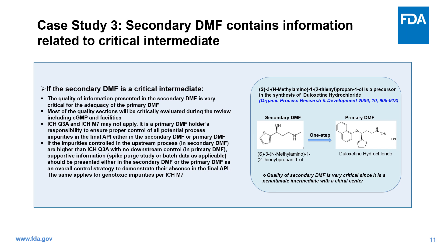In the example shown here, the primary DMF for the synthesis of its API duloxetine hydrochloride refers to a secondary DMF for a critical intermediate amino alcohol, which is not an API. Considering this chiral amino alcohol is a penultimate intermediate, all quality sections of the secondary DMF are critically evaluated for the adequacy of the primary DMF.